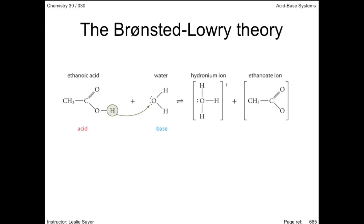This is the acid-base pair in the forward reaction, and this is the acid-base pair in the reverse reaction. The base product of ethanoic acid, the ethanoate ion, is referred to as the conjugate base. Conjugate meaning linked together.